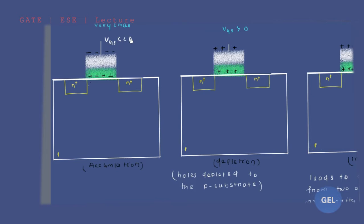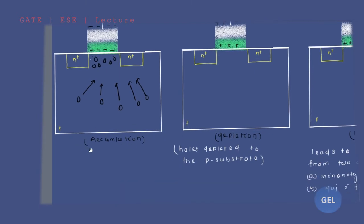Once you apply a very negative value of VGS, the negative charge influence on this surface will be much more. In this N-channel MOSFET, the negativity influence will be much more. If the negative influence is more, everything — all the negative — will be more.